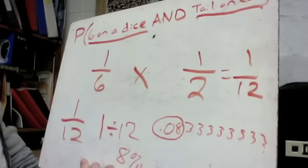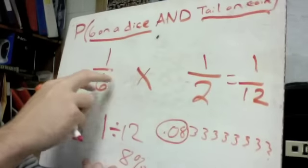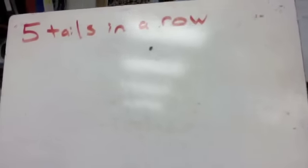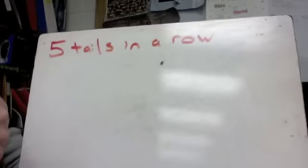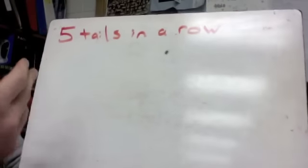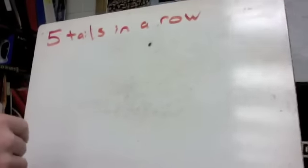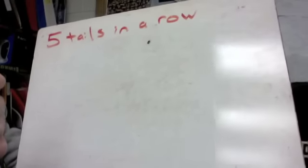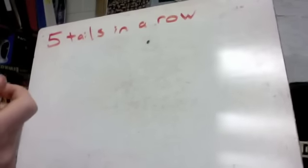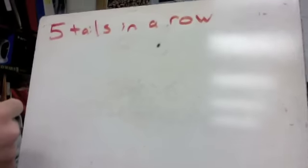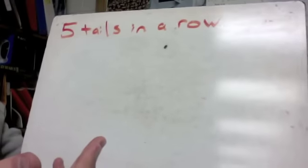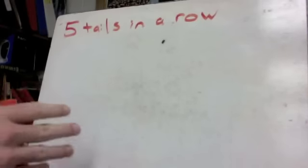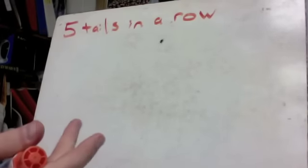All you have to do is find the probabilities separately and then multiply them together. Next, we're going to flip a coin five times. I want to see what are the odds of getting five tails in a row. It's pretty tough to get five tails in a row because every time you flip it, you're expecting a 50-50 chance. Let's figure out what the actual percentage is.